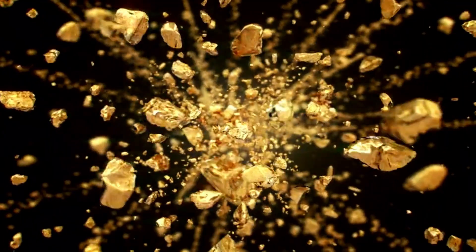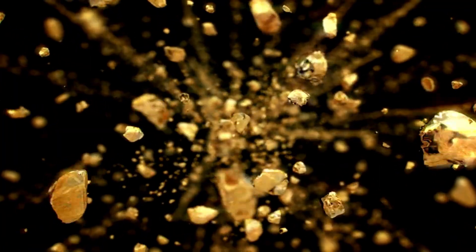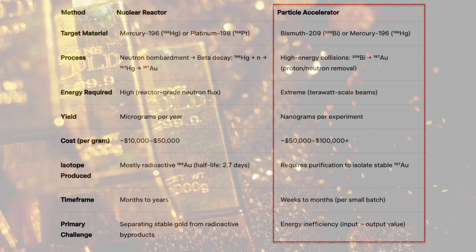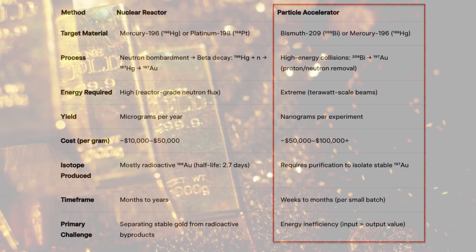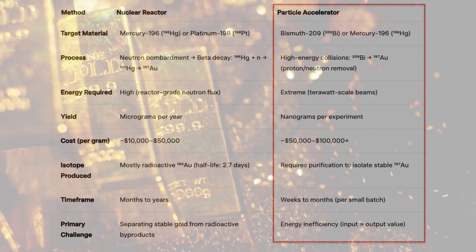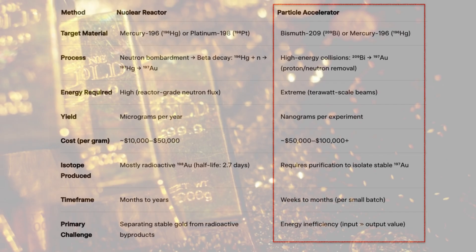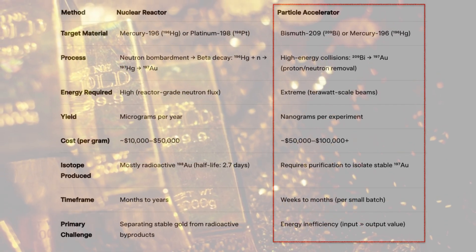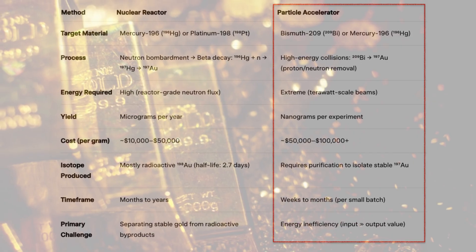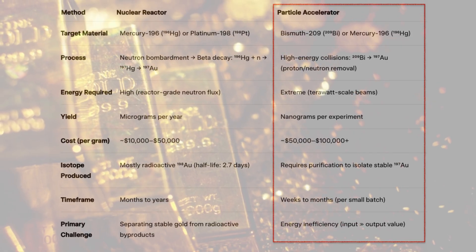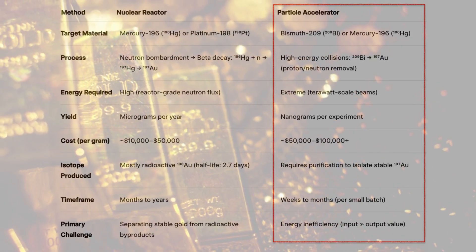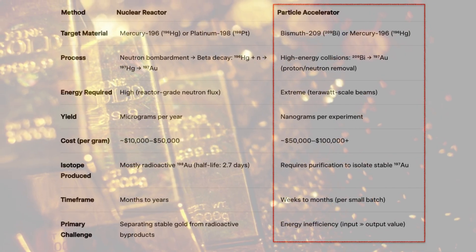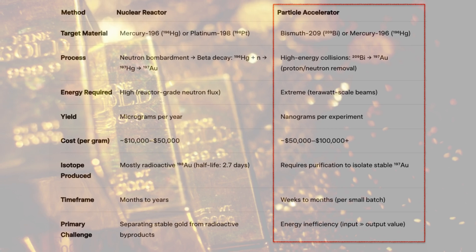Alternatively, particle accelerators offer a more direct approach. By smashing high-energy particles into bismuth-209 or mercury nuclei, it is possible to knock out protons or neutrons and transmute the atom into gold. But these accelerators are expensive to operate and the cost of energy required to create even a single gram of gold vastly exceeds its market value.